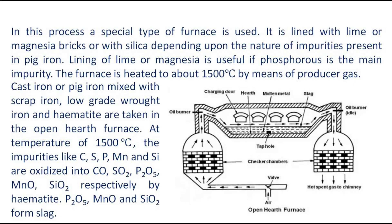Cast iron or pig iron, mixed with scrap iron, low-grade wrought iron, and hematite, are taken in the open hearth furnace. At a temperature of 1500°C, impurities like carbon, sulfur, phosphorus, manganese, and silicon are oxidized into carbon monoxide, sulfur dioxide, phosphorus pentoxide, manganese oxide, and silicon dioxide respectively by hematite. Phosphorus pentoxide, manganese oxide, and silicon dioxide form slag, as shown in the figure.